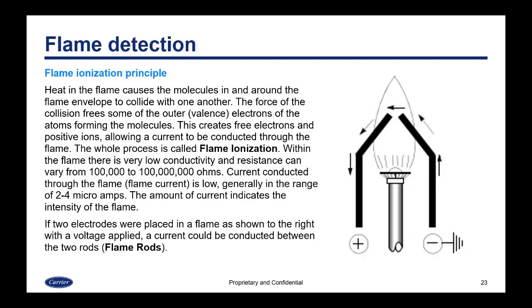Now we're into the methods of flame detection. First, we have the flame ionization principle. Heat in the flame causes the molecules in and around the flame envelope to collide with one another. The force of the collision frees some of the outer or valence electrons of the atoms forming the molecules in the flame. This creates free electrons and positive ions, which allows a current to be conducted through the flame — the whole process is called flame ionization. Within the flame there is very low conductivity and resistance can vary from 100,000 to 100 million ohms. Therefore current conducted through the flame is very low, typically in the range of two to four microamps. The amount of current indicates the intensity of the flame.